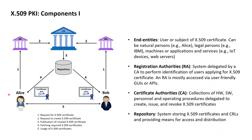The requests sent by the end entities asking for the X509 certificate are then actually sent to registration authorities, which are systems delegated to perform the identification of the end entities applying for the certificates. These registration authorities often come along as user-friendly GUIs or APIs, and once the registration authority has confirmed the identity of the requesting end entity, the request for the issuance of a certificate is then forwarded to a certificate authority.